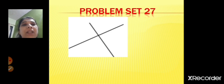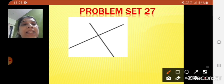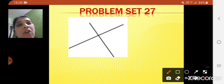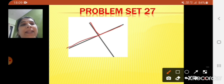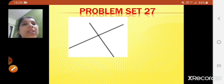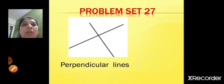The last figure — is it parallel or perpendicular? It is not parallel. It is a perpendicular line because it forms an angle of 90 degree. On the left-hand side it forms 90 degree, and below it also forms an angle of 90 degree on both sides. So this is also a perpendicular line. With this we finish problem set 27.